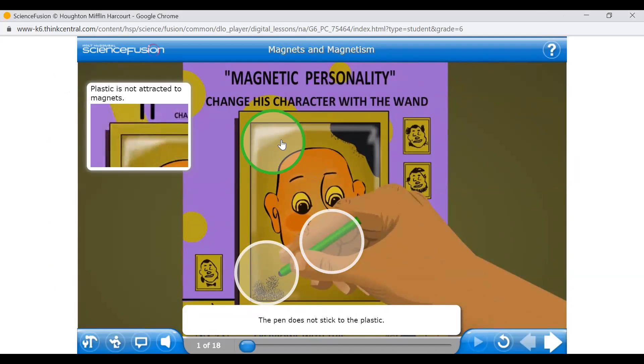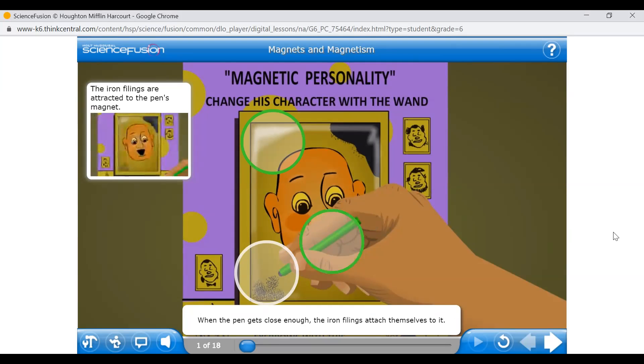The pen does not stick to the plastic. The magnet in the pen is attracted to a certain material only, and plastic is not it. When the pen gets close enough, the iron filings attach themselves to it. In this case, there is plastic between them, but the attraction is still there. If you move the pen, the filings follow. Look, a mustache!